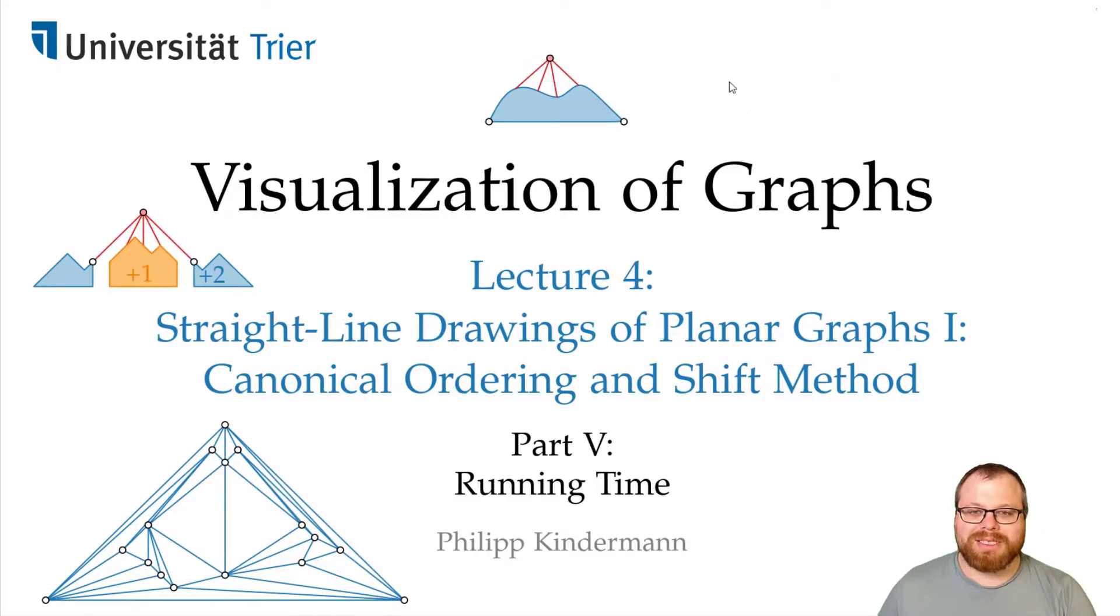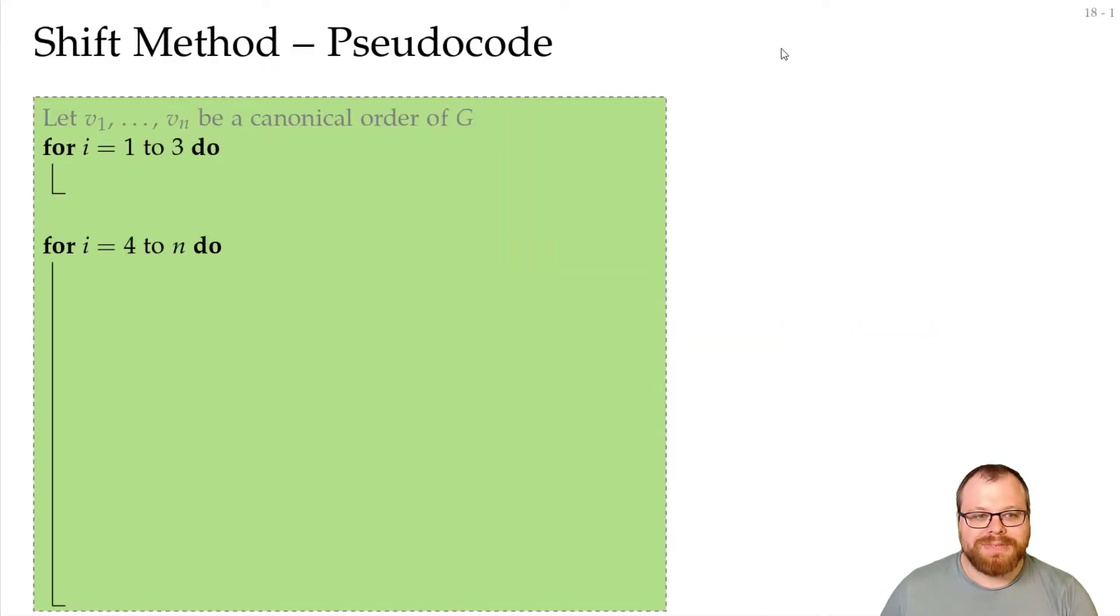We have proven that the shift method gives us a planar drawing on a grid of polynomial size. Now we want to figure out what is the runtime of this. And for that we first want to have a look at the pseudocode. How can we implement this?